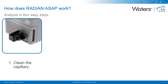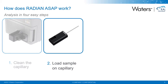The first step is to clean the capillary to remove any background material which may have been picked up from the packaging or from handling. To do this, you simply load the capillary into the system and use the dedicated bakeout button in the software. This automatically heats the capillary to 600 degrees centigrade for one minute, increases the gas flow, and raises the corona current to remove any contaminants which may give background ions in your analysis.